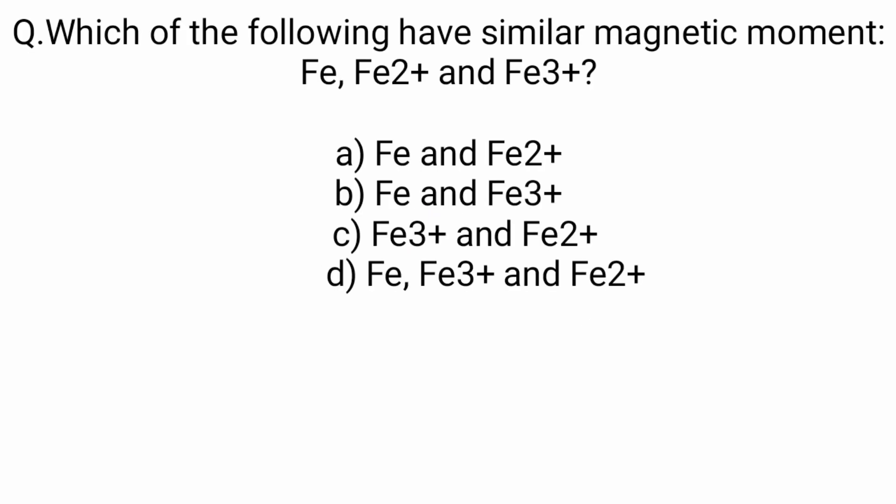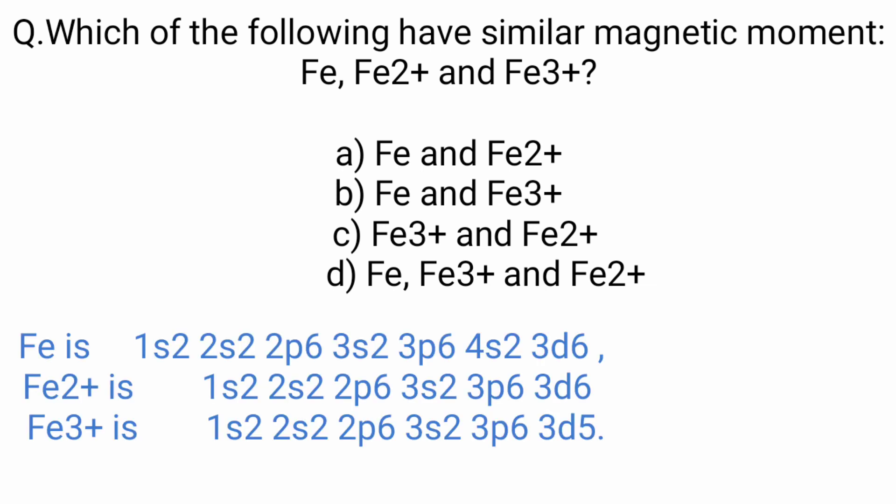Which of the following have similar magnetic moment? Fe, Fe2+, Fe3+. So magnetic moment depends on number of unpaired electrons. These have three electronic configurations. So here we see, both Fe and Fe2+ have 4 unpaired electrons, while Fe3+ has 5 unpaired electrons. So we have Fe, Fe2+ have same magnetic moment. So right option is option a.